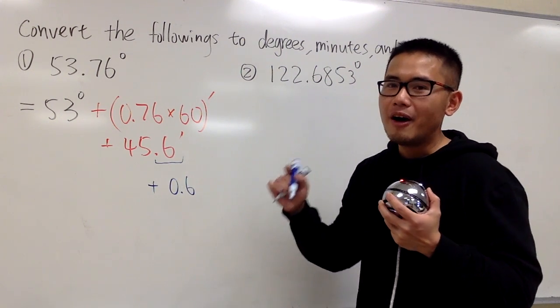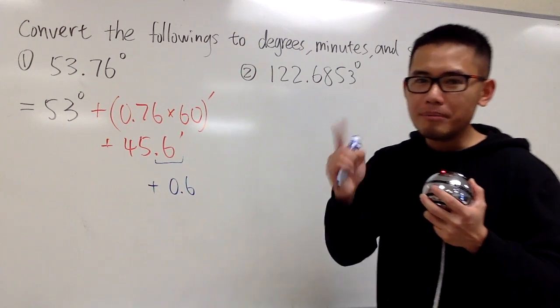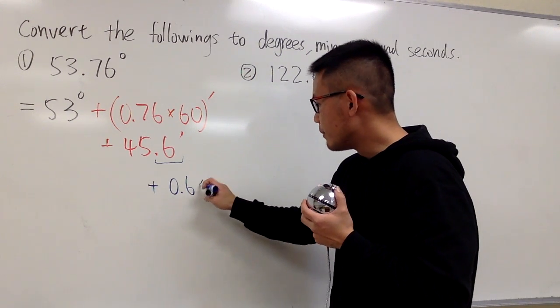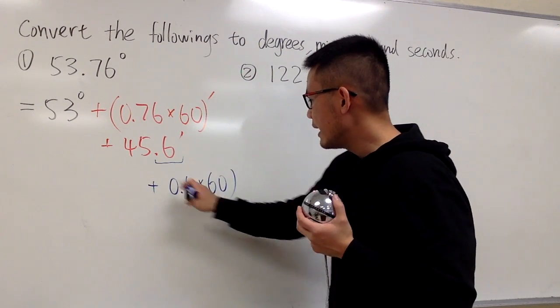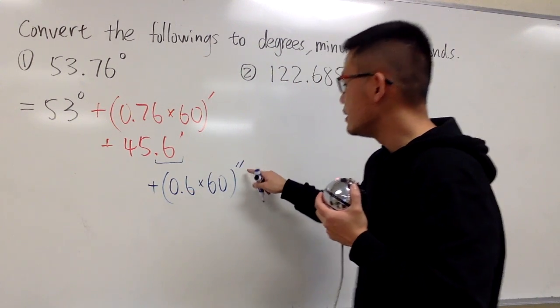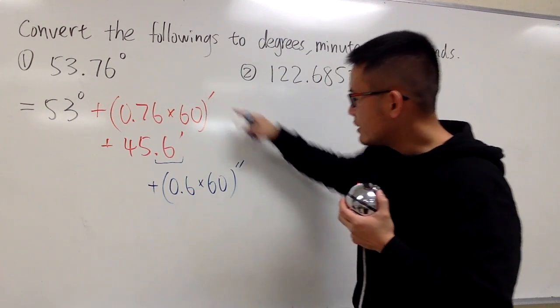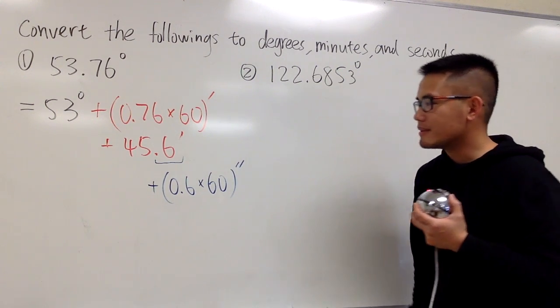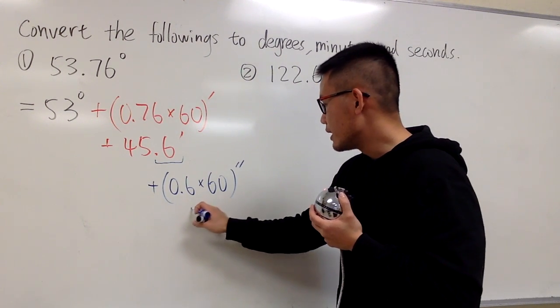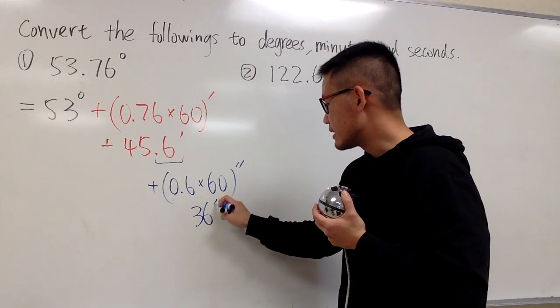we have to know that there are 60 seconds in one minute. So we'll take this, multiply it by 60, and then we will be able to get to the seconds. This right here, just multiply it, you will get 36 seconds.